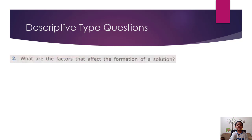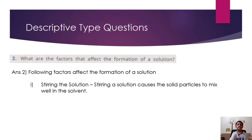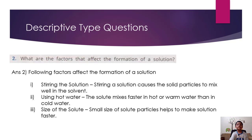What are the factors that affect the formation of a solution? Following factors affect the formation of a solution: Stirring the solution - stirring causes the solid particles to mix well in the solvent. Using hot water - the solute mixes faster in hot or warm water than in cold water. Size of the solute - small size of solute particles helps to make solution faster.